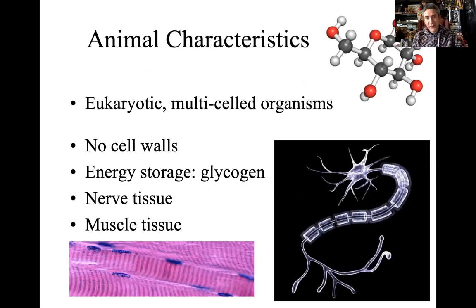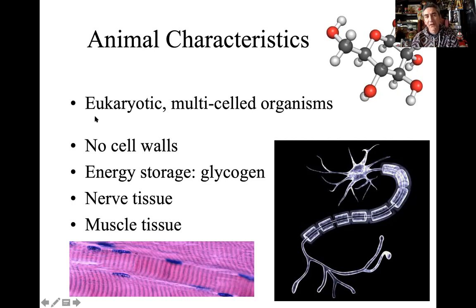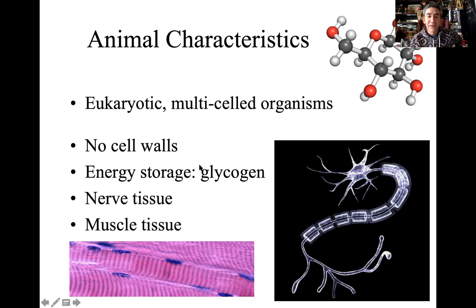Poriferans fall within Kingdom Animalia. What makes an animal an animal, taxonomically speaking? A couple of qualifications have to be in place. First, we have to have a eukaryotic cell — there are no prokaryotic animals. All animals are eukaryotic and multicellular. The poriferans kind of blur that line a little bit. We have multicellular, eukaryotic organisms not protected by a cell wall. For energy storage, they have a polysaccharide that we call glycogen.